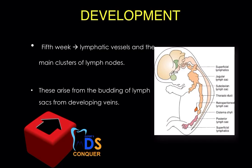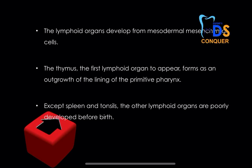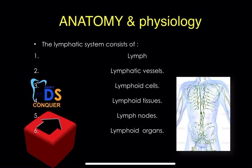Next is the development. In the fifth week, the lymphatic vessels and the main clusters of the lymph nodes are being formed, and they arise from the budding of the lymph sacs from the developing veins. The lymphoid organs then develop into mesodermal mesenchymal cells, with the thymus being the first lymphoid organ to appear. Except for the spleen and tonsils, other lymphoid organs are poorly developed before birth.